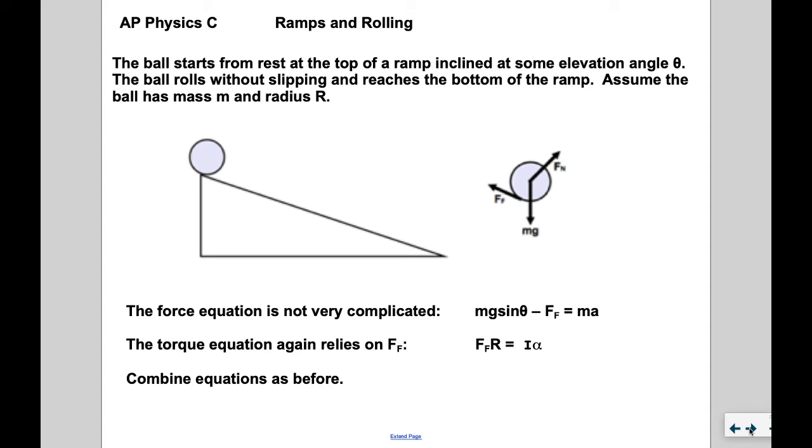We're familiar with resolving MG into components: MG sine theta, or F parallel, pulling down the ramp, and MG cosine theta pushing into the ramp. For the force equation in the direction of motion, MG sine theta points down the ramp, FF is up the ramp, and sigma F equals MA.